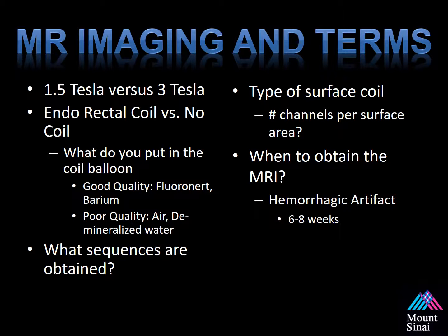Also, what sequences are being obtained? I'll go over this in detail later. Types of surface coils — what's the number of coils per area? As technology evolves, this is not so applicable now. However, we typically use the 16-channel anterior cardiac coil over the pelvis to obtain higher quality images.